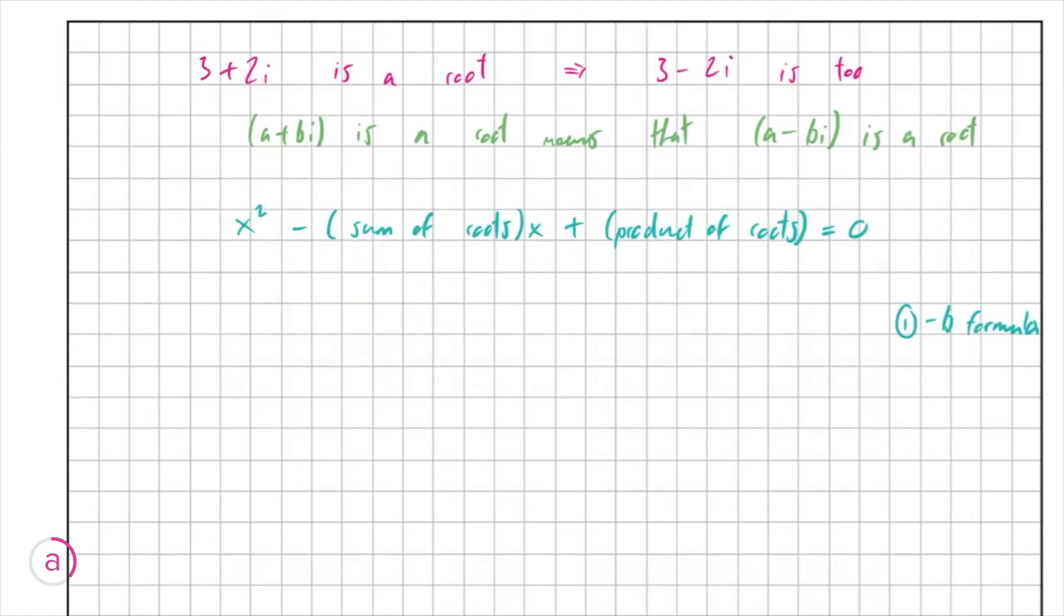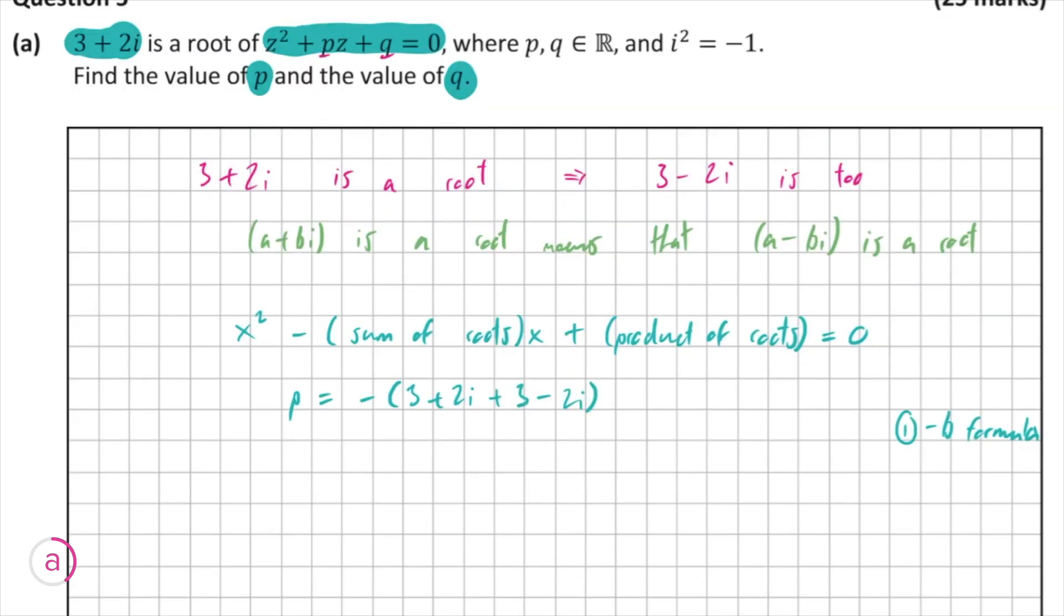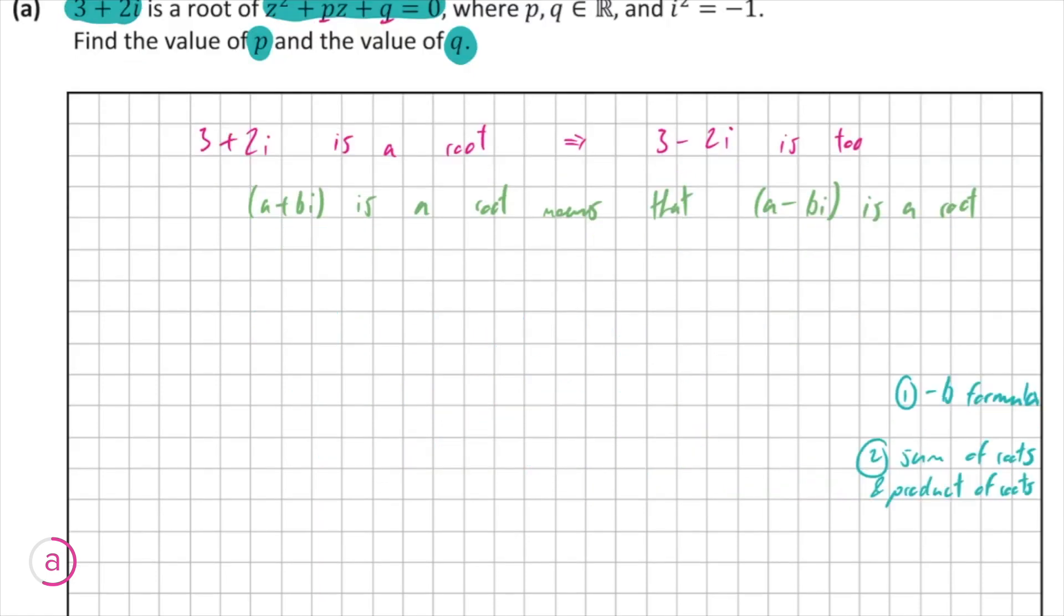So another way of approaching this question is by saying that because z squared minus the sum of the roots times z plus the product of the roots equals zero, as true for any quadratic, we can say that p is equal to minus everything in this bracket, and q is equal to the product of the roots, which is 3 plus 2i times 3 minus 2i. So p will simplify to minus 6. Because we know for any two conjugates that a plus bi times a minus bi is equal to a squared plus b squared, where a is the real component and b is the number in front of i, q is then 3 squared plus 2 squared, which is 13. So that's a very fast way of finding p and q, and it definitely rewards a good knowledge of how quadratics work. So we'll call that method the sum of the roots and product of the roots method.